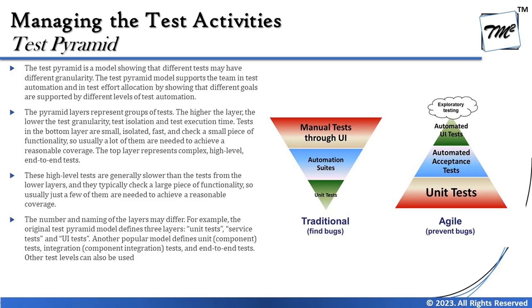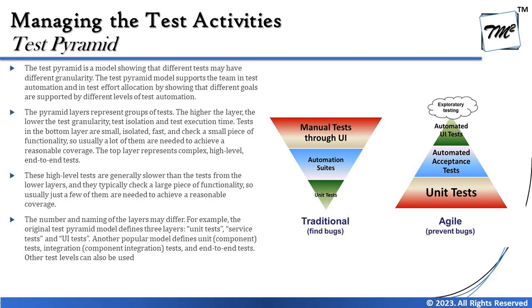The test pyramid is basically a model showing that different tests may have different granularity — meaning the amount of effort being put in, which levels go deep versus which are done at a high level. The test pyramid model supports the team in test automation and test effort allocation, showing that different goals are supported by different levels of test automation.